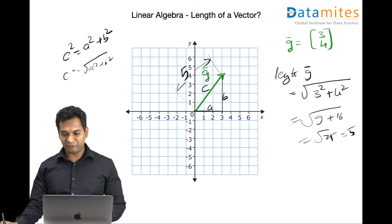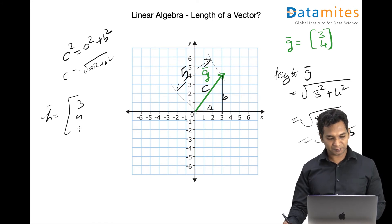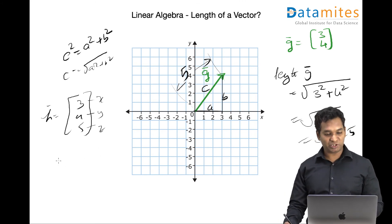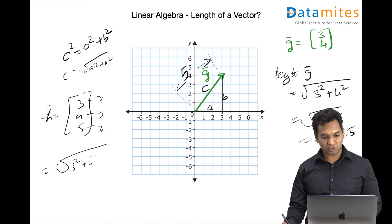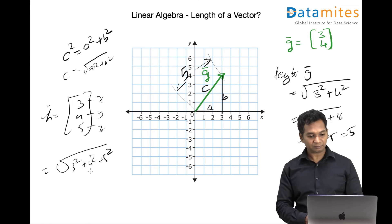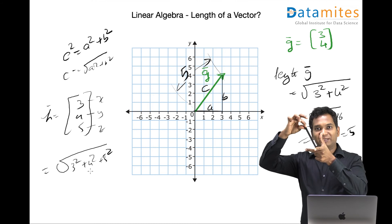For example, if you have another vector, which is like an h vector, which has three-dimensional values. This is corresponding to x-axis, this is y and this is z. How do you find the length of this? Well, the same equation, you just have to do 3 square plus 4 square plus 5 square. It's simply an extension of the same theorem. That gives you the length of the vector in your three-dimensional space.